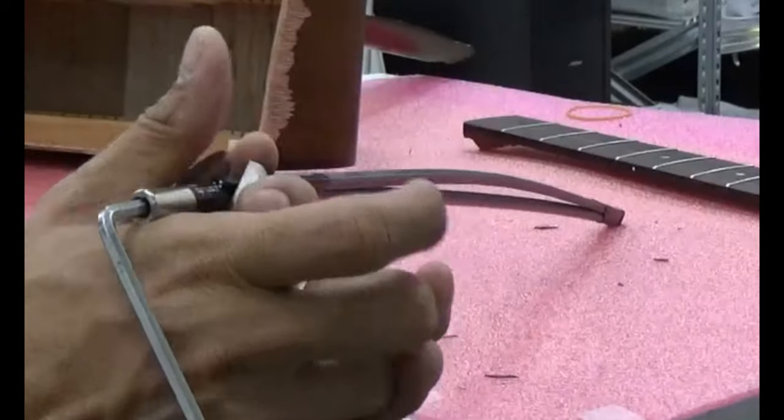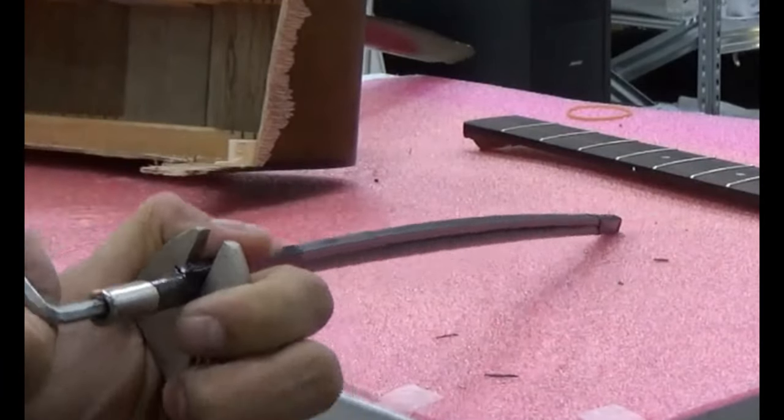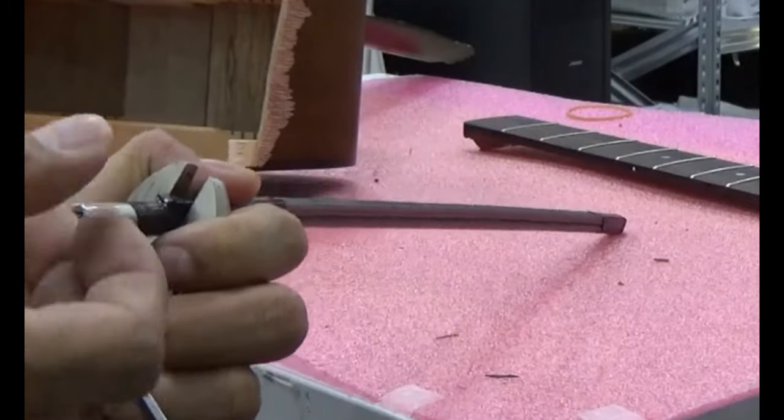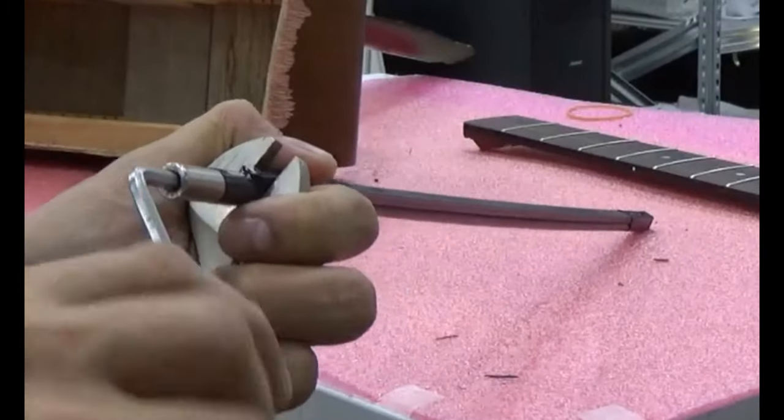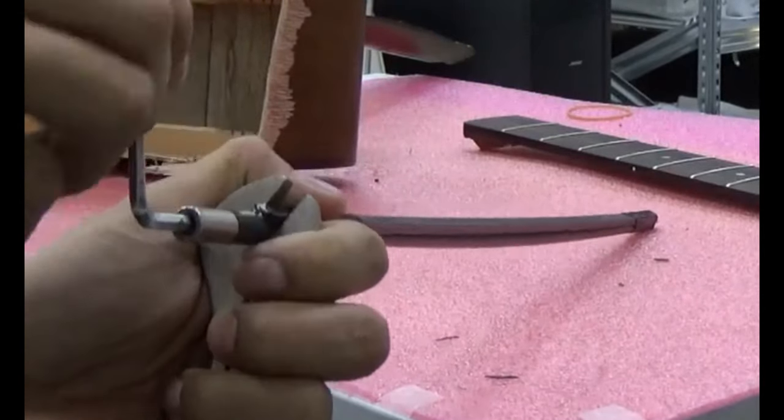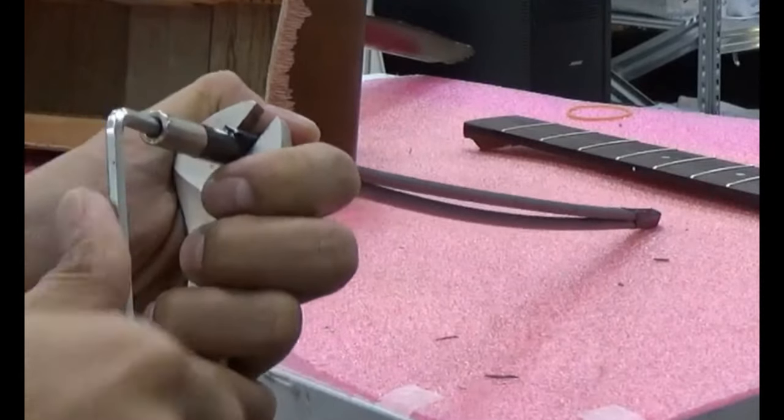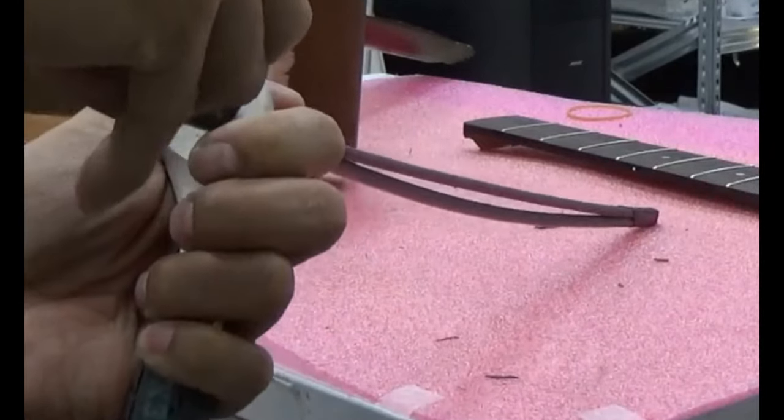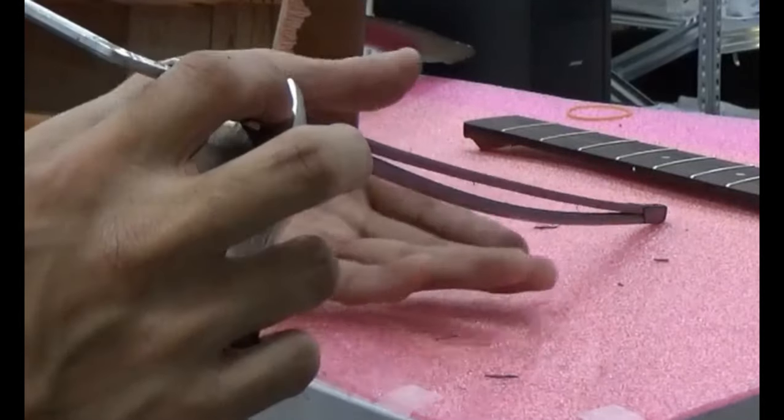If we rotate counterclockwise, the lower side of the neck bows.